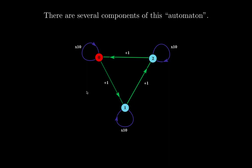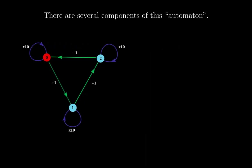The components of this automaton are as follows. The first thing is what we call the states. The states are the set 0, 1, and 2, which correspond to the circles here. One thing to notice: the numbers 0, 1, and 2 are the possible remainders when you divide by 3. That's going to come in handy later.